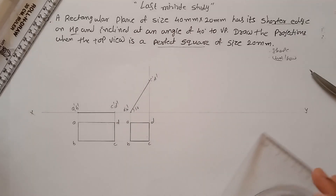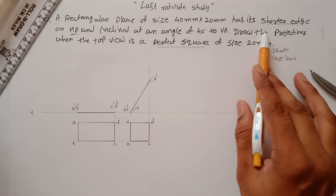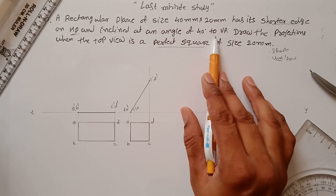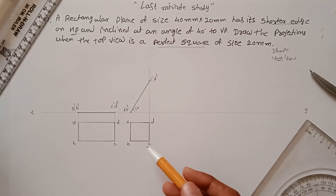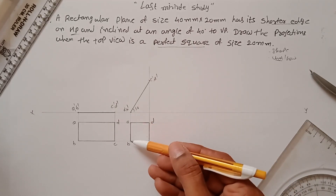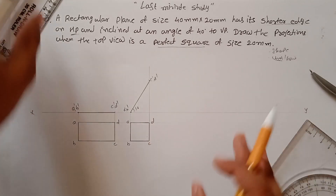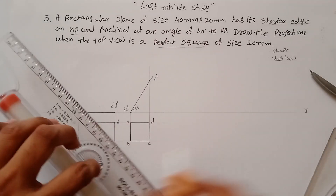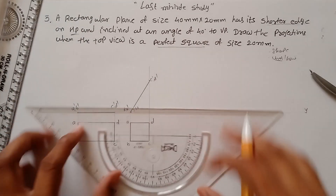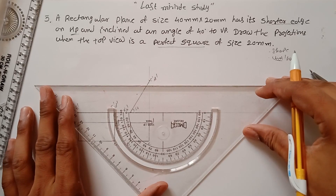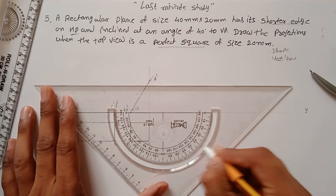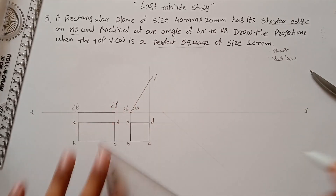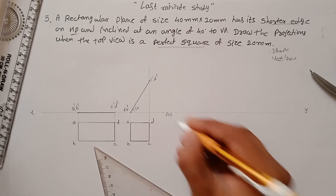Now for the final position: the shorter edge AB remains on HP but is inclined at 40 degrees with the VP. So edge AB makes a 40 degree angle with the VP. Mark a point, measure an angle of 40 degrees, and draw a line at that angle — this 40 degree angle represents the inclination of AB.